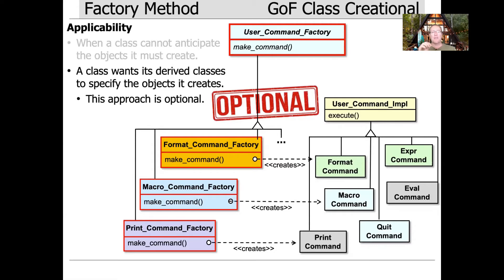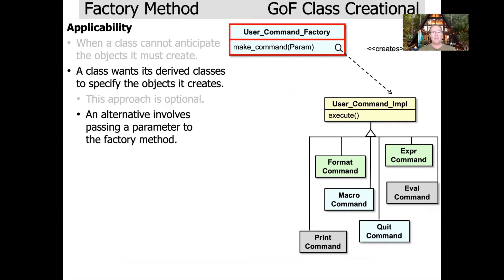This use of derived classes is optional. In fact, I mentioned before, I don't really like it because it gets unwieldy very quickly. An alternative approach, which I tend to like better, is just to pass a parameter to the factory method and then let the factory method figure out what kind of object to make based on the parameter that's passed to it.